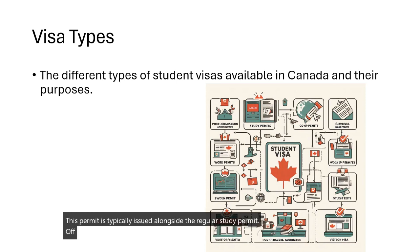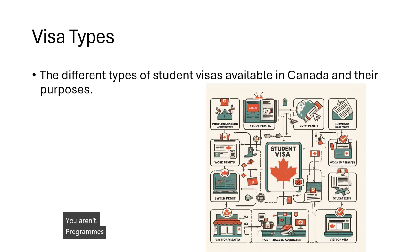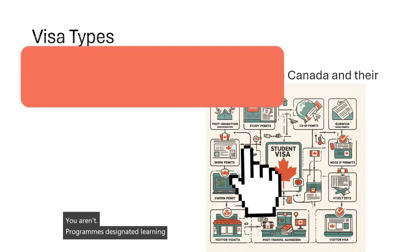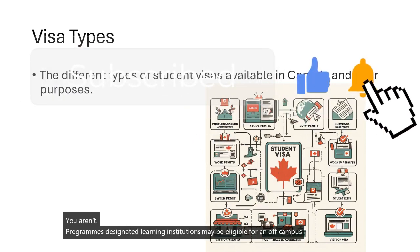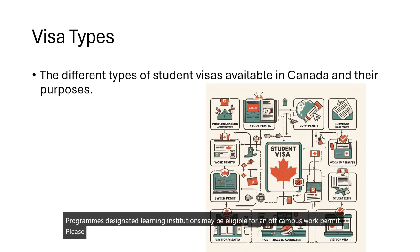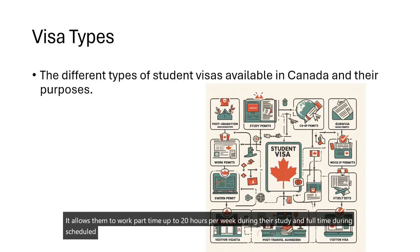Off-Campus Work Permit: International students with a valid study permit who are enrolled in full-time academic programs at designated learning institutions may be eligible for an off-campus work permit. This permit allows them to work part-time, up to 20 hours per week, during their study and full-time during scheduled breaks.